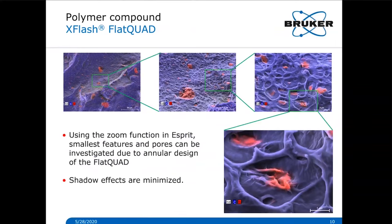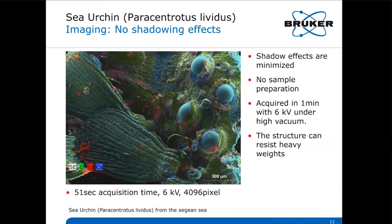The next example demonstrates stronger topography — here is a sea urchin from the Aegean Sea in Greece. It is a beam-sensitive sample with the strongest topography, where sample preparation like carbon coating was excluded, and to avoid charging the sample had to be analyzed with the smallest aperture under low kV. This map of the sea urchin was acquired in less than a minute under high vacuum at 6 kV. Tubercles are visible in turquoise on the right, while the green and turquoise spade-like structures on the left are minuscule spines. Individual sand grains are visible in red, and shadow effects are minimized nearly to zero.